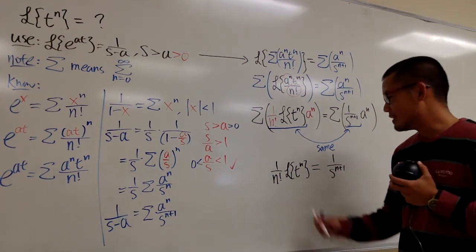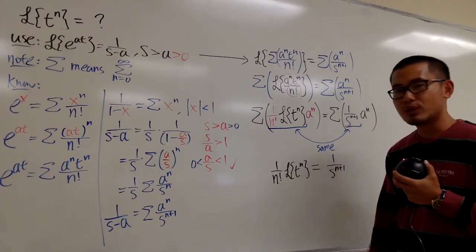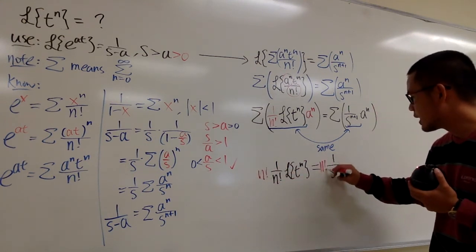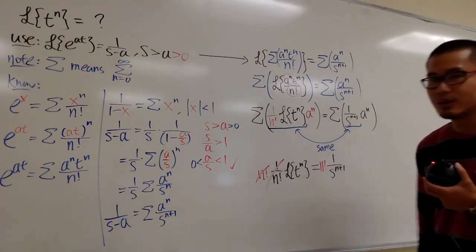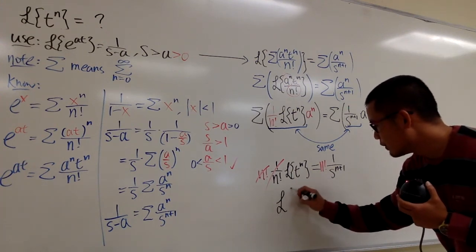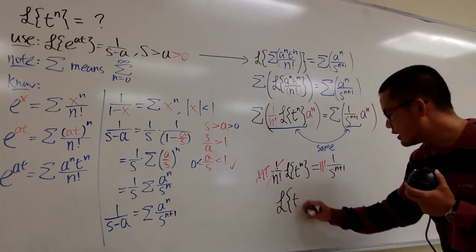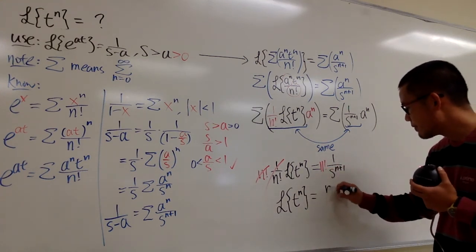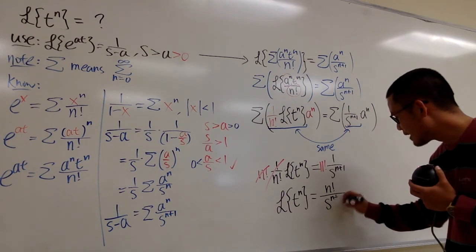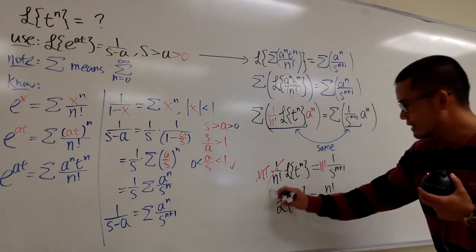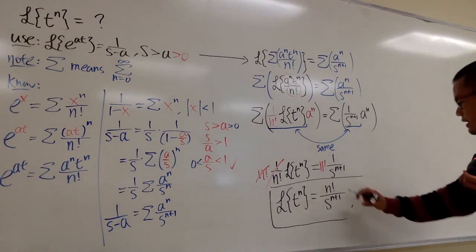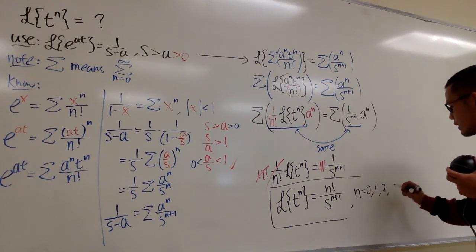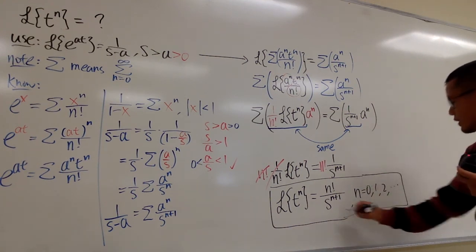We just need to isolate the Laplace transform of t to the nth power by multiplying both sides by n factorial. The n factorials cancel, and we get the final result: the Laplace transform of t to the nth power equals n factorial over s to the n plus 1 power. This is true for n equal to any non-negative whole number: 0, 1, 2, 3, 4, 5, and so on.